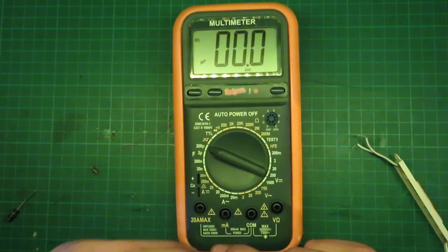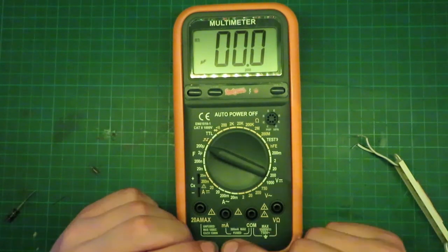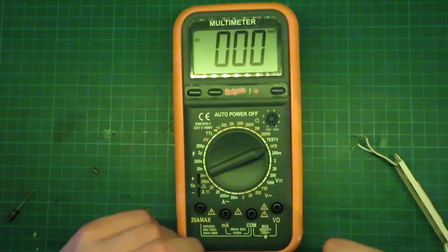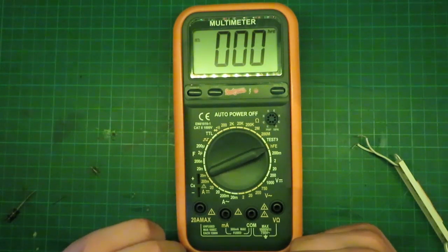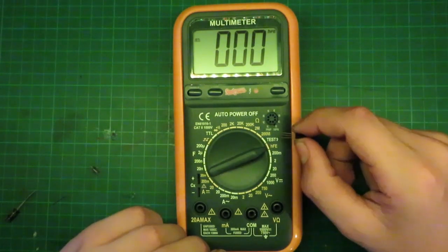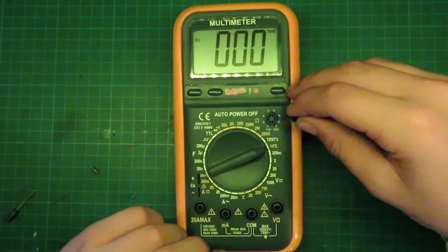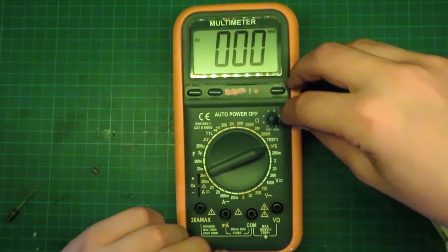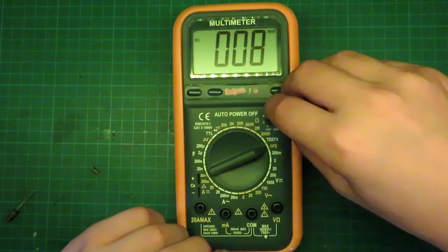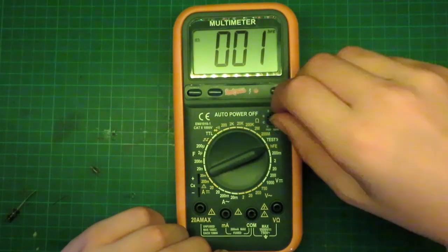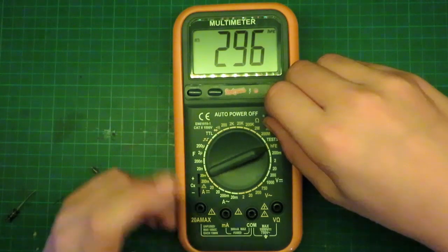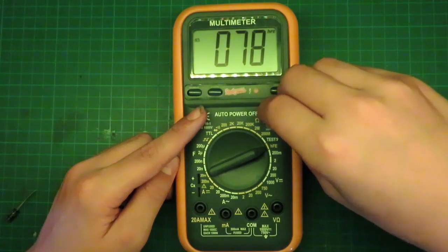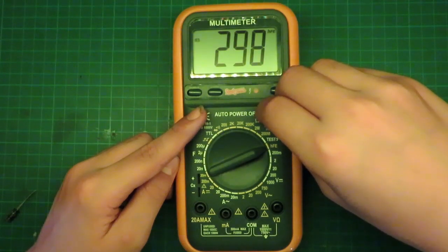Another thing your multimeter might have is something to test transistors. So flip it over here. This would be a normal HFE position. And what this will do is test your transistors here. This is an NPN transistor. And you have to put it in properly, like the emitter base collector. You have to put those in properly. I have that in backwards, I'm pretty sure. There we go. And you see this has 200, there it was, what was there? 298 HFE.